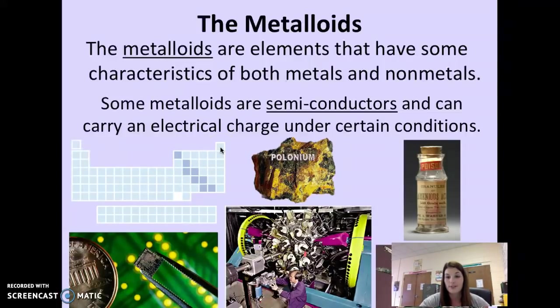The big thing to always remember, metalloids are semiconductors. Semiconductors, which means they can conduct electricity under certain conditions, depending on which element it is and what the conditions are surrounding it. A couple of places that we see some of these elements, arsenic right here. Arsenic is a poison, but it is also found in insecticides, which is why it's a poison, and in wood preservation. So if you buy treated lumber, it might have arsenic in it.